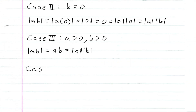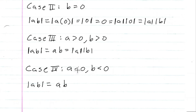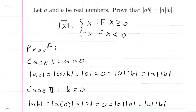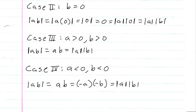Case four: a is less than zero and b is less than zero. We have the absolute value of ab. Since both are negative, a times b is positive, so the absolute value of ab is just ab. We can rewrite ab as negative a times negative b, since those are equal. Since a is less than zero, negative a equals the absolute value of a. Since b is less than zero, negative b equals the absolute value of b. So we still get the absolute value of ab equals the absolute value of a times the absolute value of b.